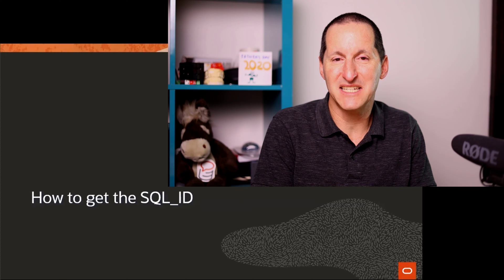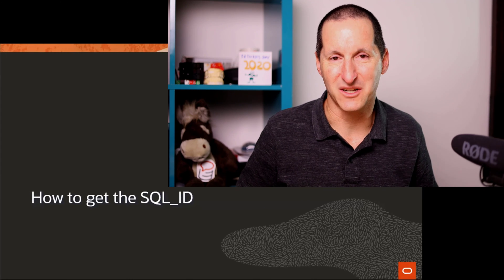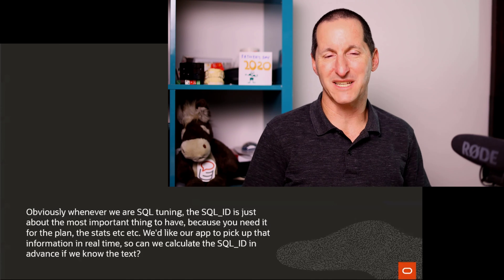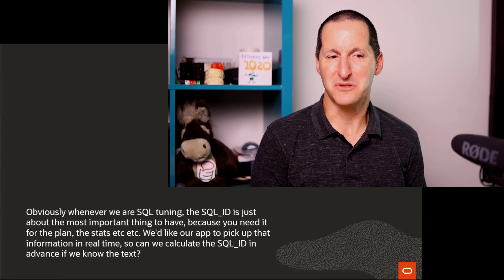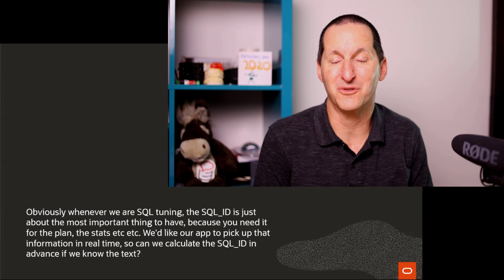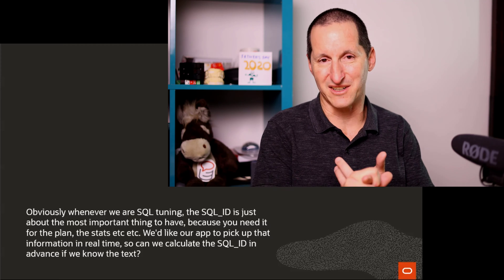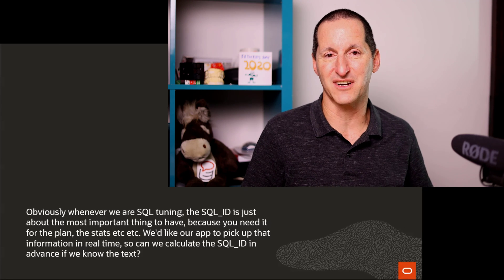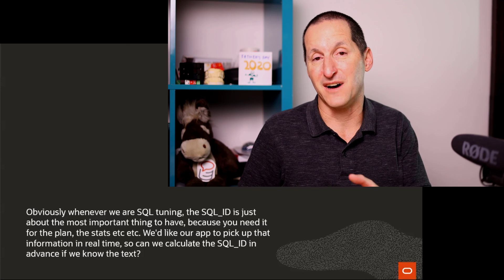How to get the SQL ID? Here's the question that came in. Obviously, whenever we are SQL tuning, the SQL ID is just about the most important thing that you have to know. It's the thing we often do with SQL tuning — you go querying V$SQL or V$SQL_AREA, V$SQL_STATS, etc., and you look for stuff which is expensive, and then you find the SQL ID.